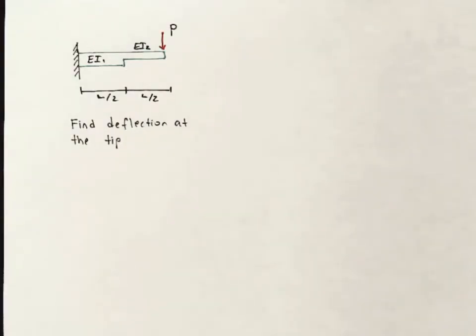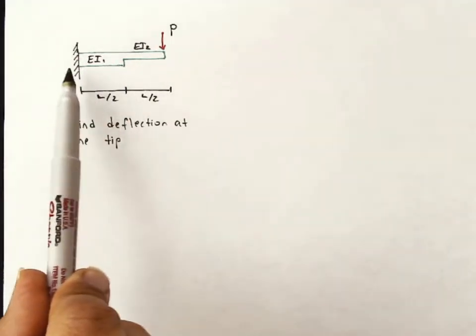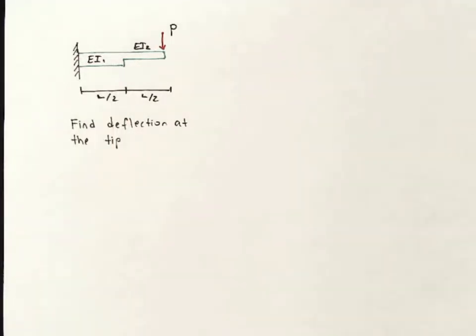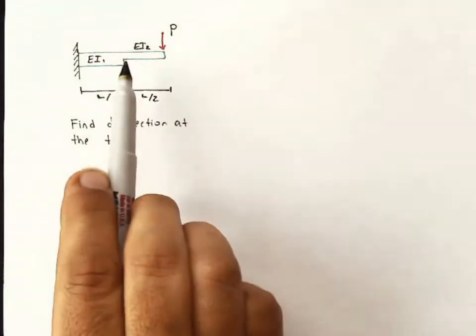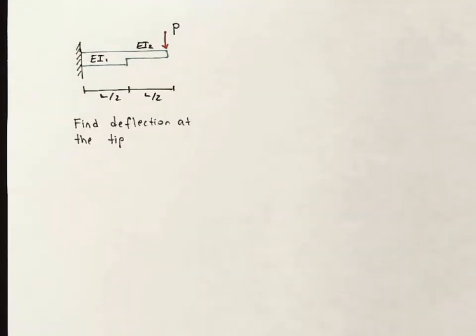The strange part about this problem is that the cross-section changes. Over this first region on the left-hand side, we have a flexural stiffness EI sub 1. Over this other portion, we have a flexural stiffness EI sub 2. We'll see how that comes into play.